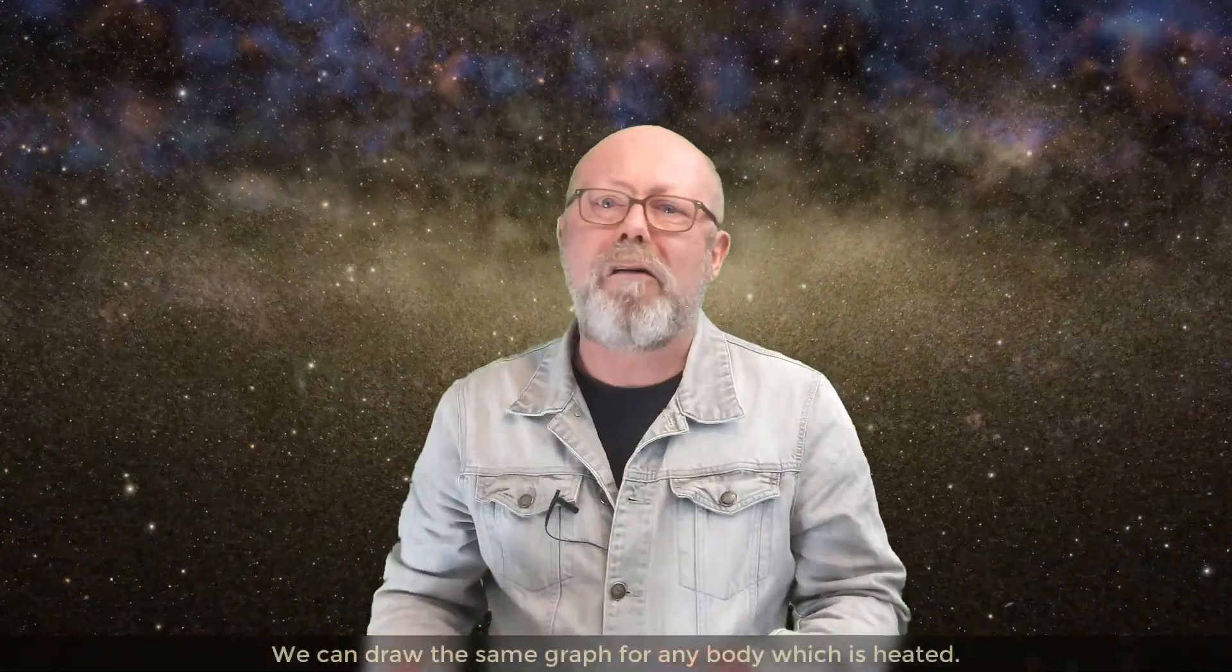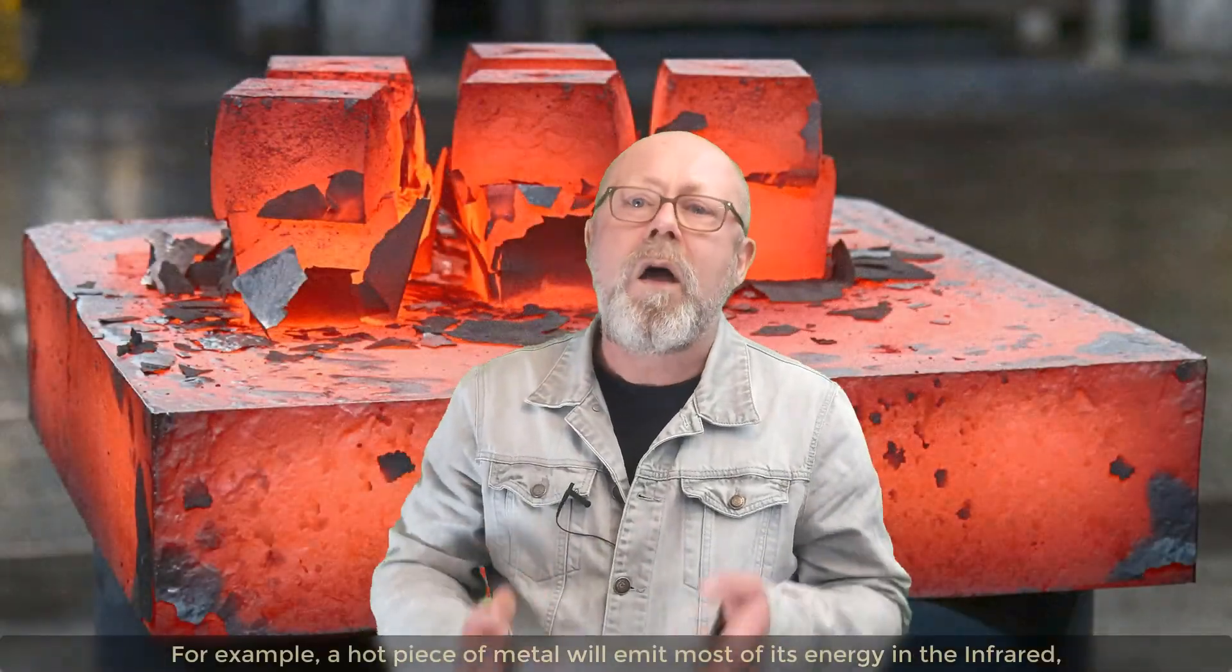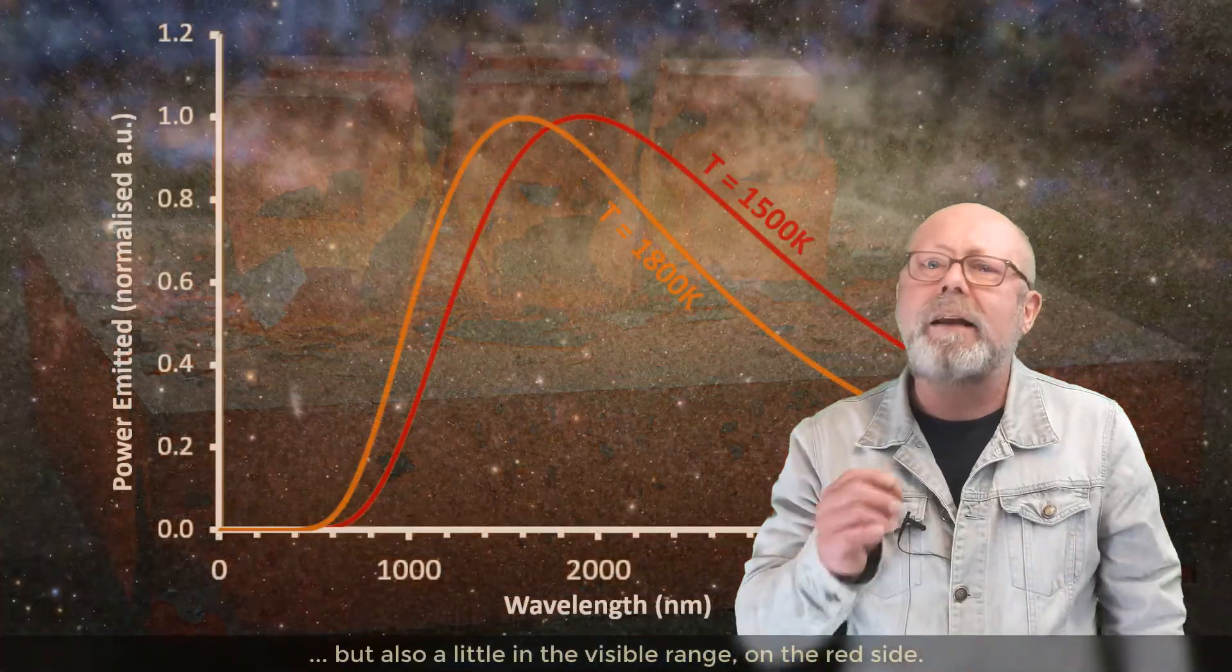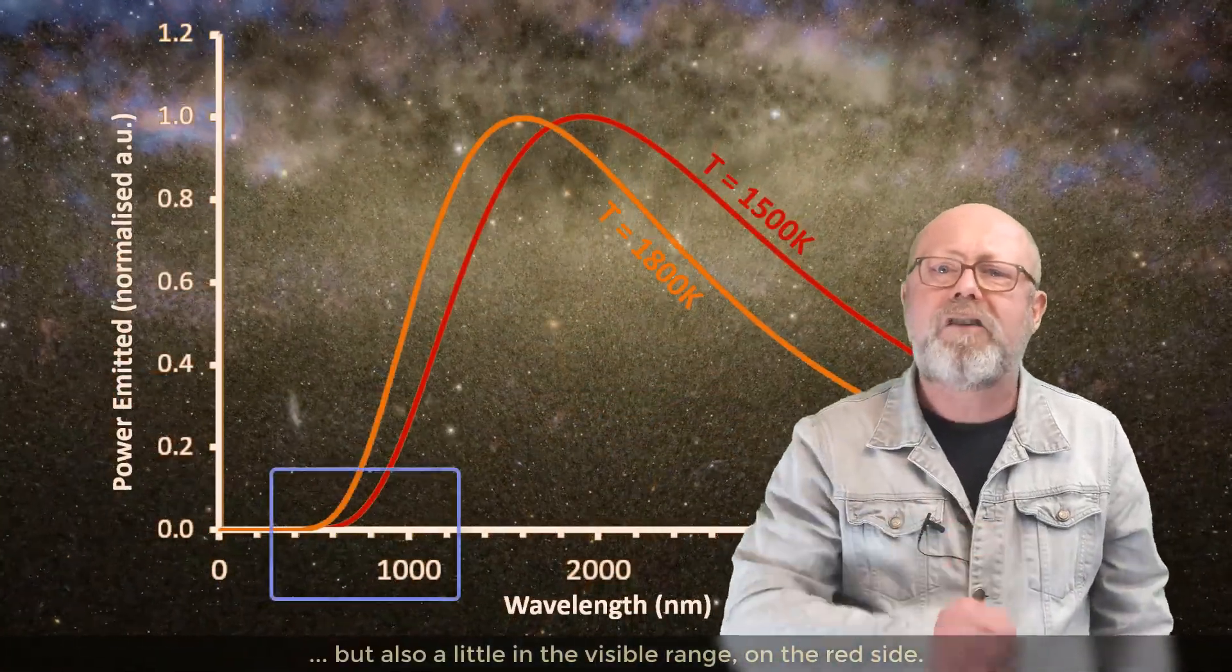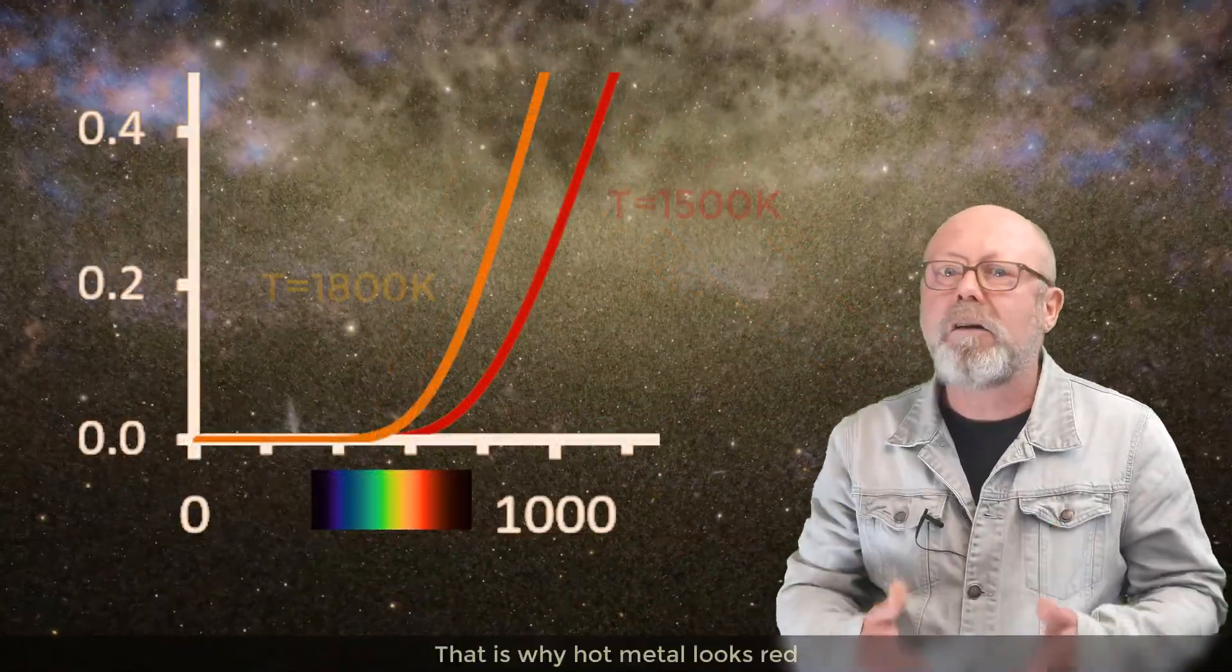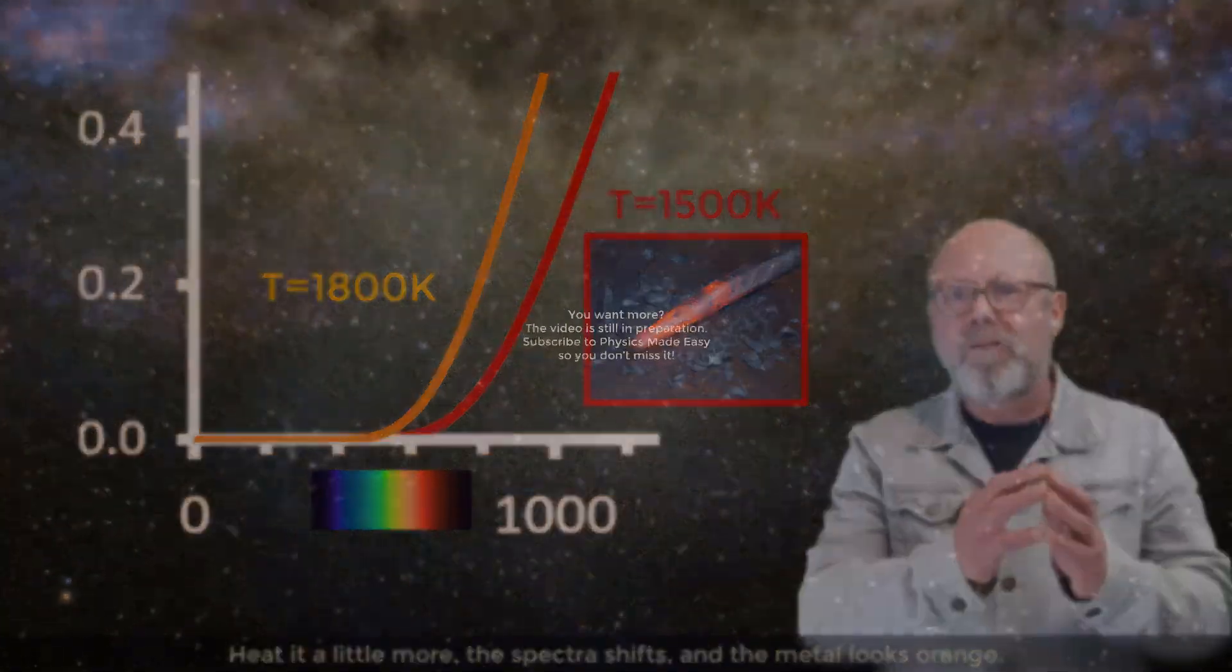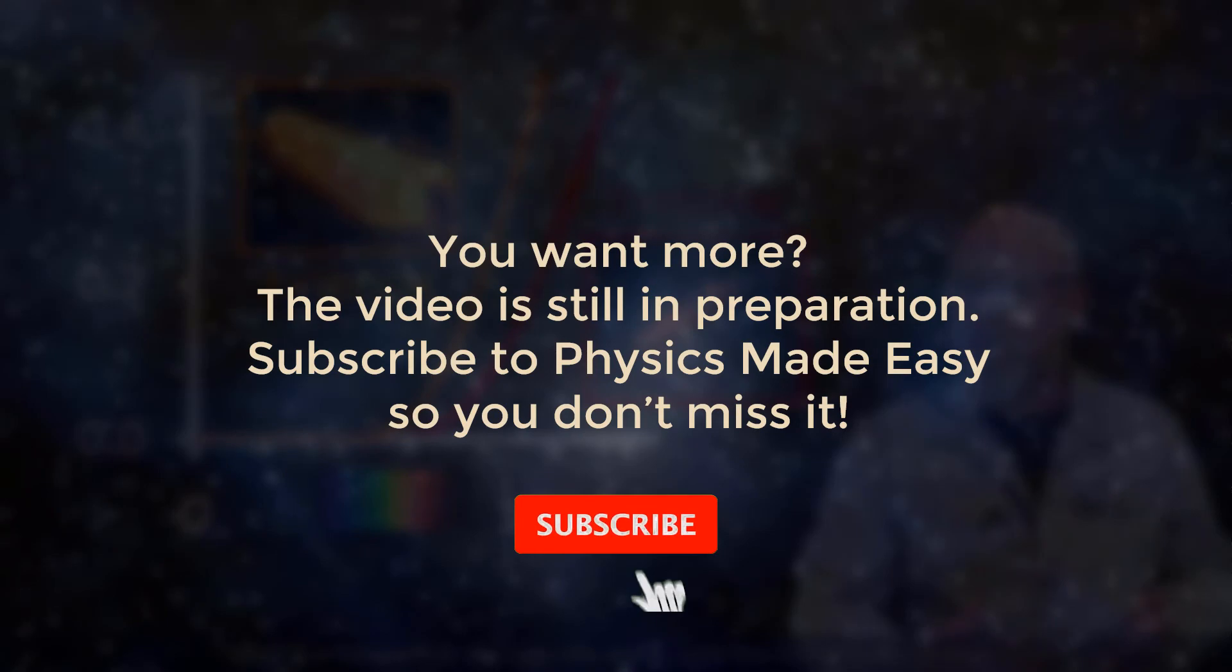We can draw the same graph for any body which is heated. For example, a hot piece of metal will emit most of its energy in the infrared, but also a little in the visible range, on the red side. That is why hot metal looks red. Heat it a little more, the spectra shifts, and the metal looks orange.